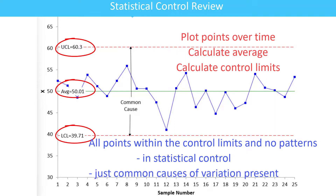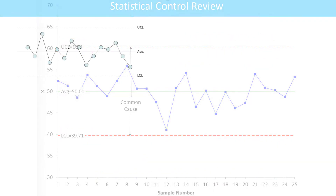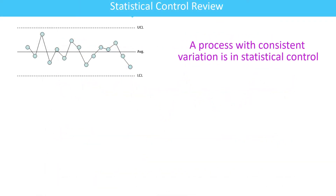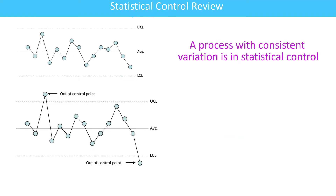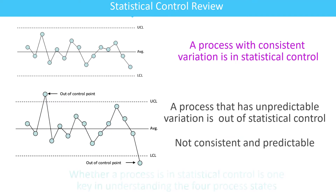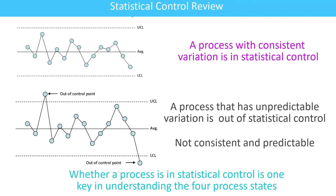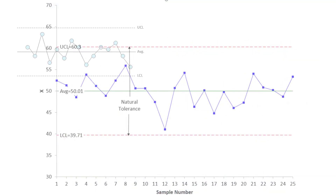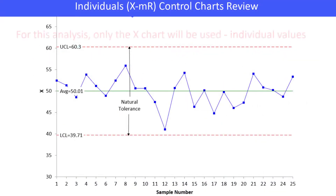You just have common causes of variation present. With a control chart, we're looking at two things in terms of control: a process with consistent variation is in statistical control. If you have out-of-control points, that process has unpredictable variation and is out of statistical control. Whether or not a process is in control is one of the keys to understanding the four process states.